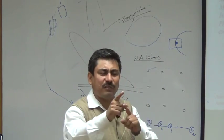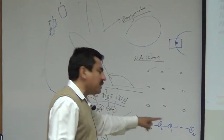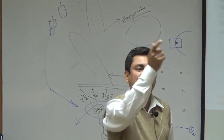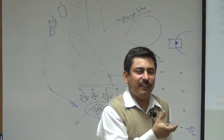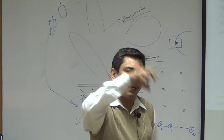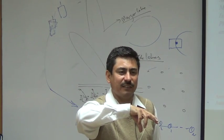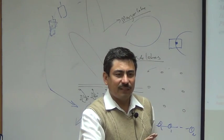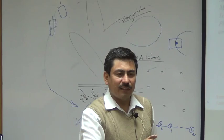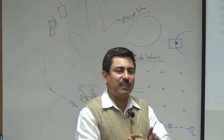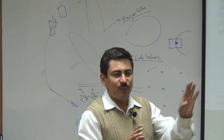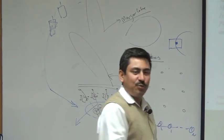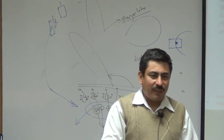If two spatial signatures happen to be the same, the mobile is immediately moved to another frequency — SDMA is always made hybrid with some other technology. So if the signatures match, those users are given a different frequency to avoid interference.